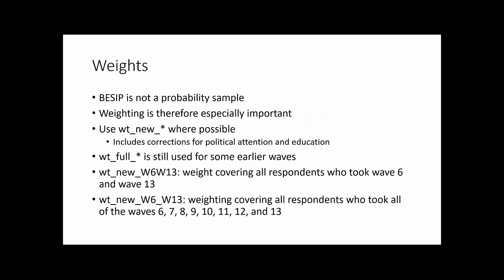If you use the data, you need to use weights — they can make a big difference. Where possible, use the weights that are named 'weight_new_something,' because these include corrections for political attention and education, which are two big biases in the raw data. These were two of the problems that led to the 2015 polling miss and have since been corrected. There are still some waves using 'weight_full' — we're trying to phase these out — but if you have to use them, bear in mind they don't have these corrections.